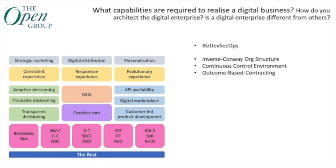From an operating model point of view, things like inverse Conway maneuvers in the org structure, continuous control environments to handle regulatory compliance and cybersecurity, as well as techniques like outcome-based contracting, which seek to look at value delivered through partnerships rather than a traditional perspective more about costs under management.